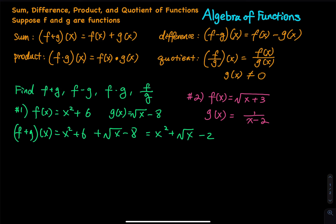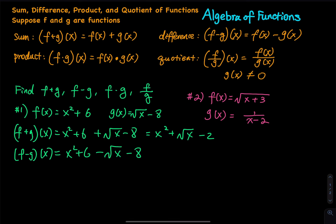For the difference, f minus g of x is equal to x squared plus six minus the square root of x minus a. Did I miss anything important? The answer is yes — you are subtracting the entire function g, so you have to use parentheses.